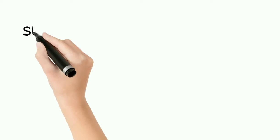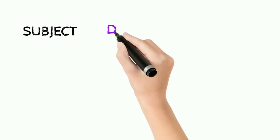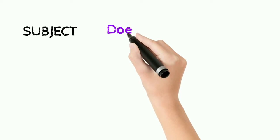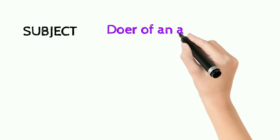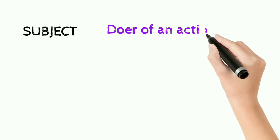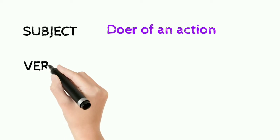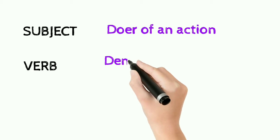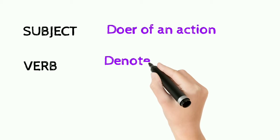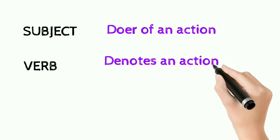Let's see how to identify the sentence pattern. Subject is the doer of an action. Subject may be a noun. Verb denotes an action — an action which is done by the subject is a verb.